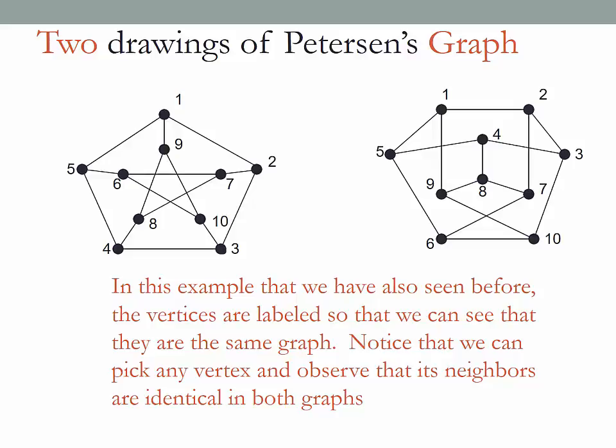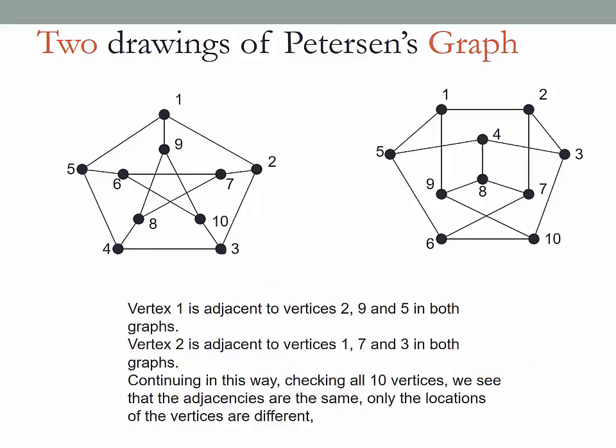If we were to check every single vertex, all 10 of them, we would make the same observation. So in fact, if we skip to vertex 10, we see that vertex 10 on the left is adjacent to 6, 9, and 3. And vertex 10 on the right is also adjacent to 6, 9, and 3.